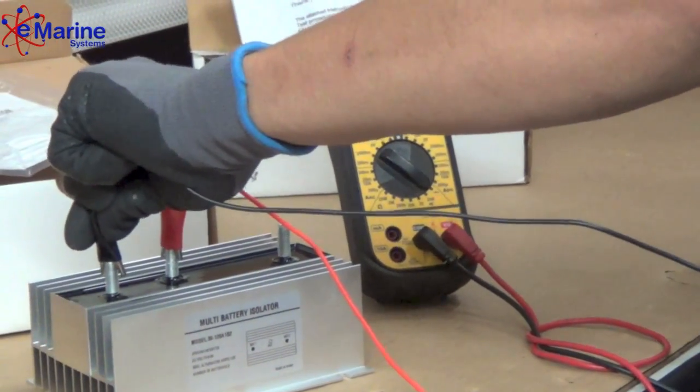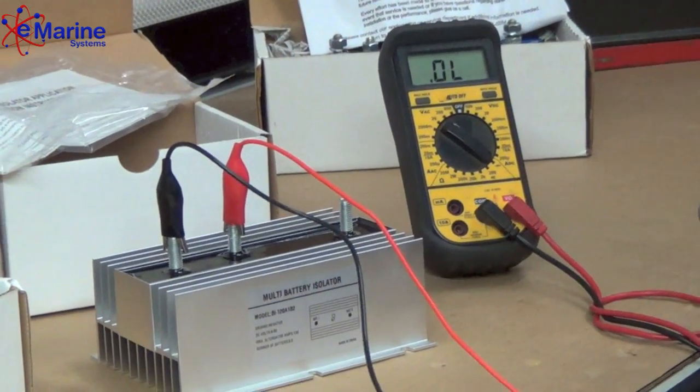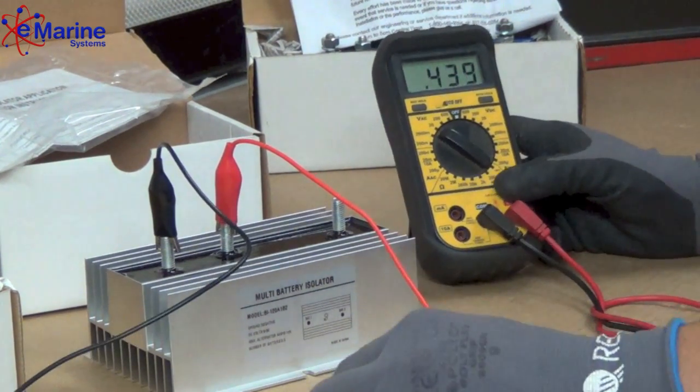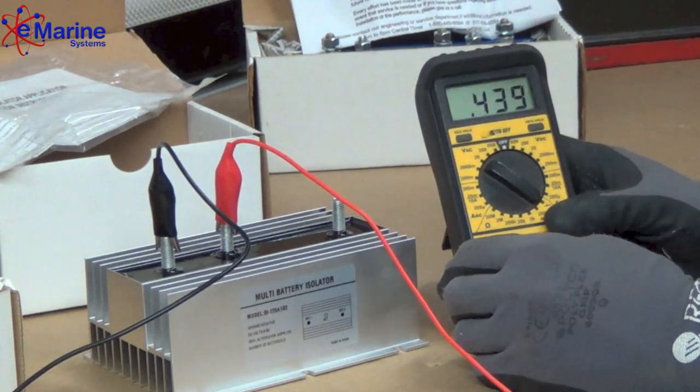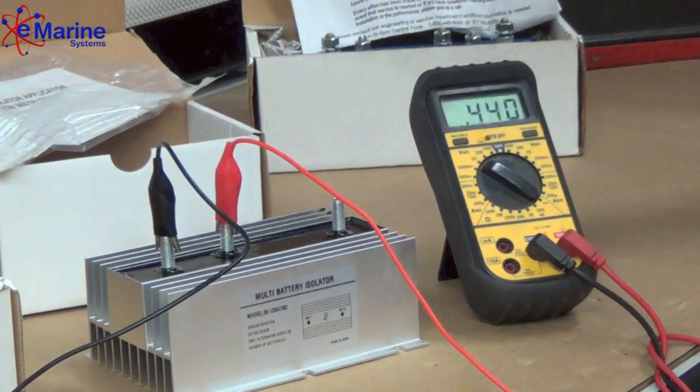We want to make sure that electricity can flow from one point to the other. Now we get a value from the diode that's within the isolator, showing that electricity will flow in that direction. We reverse our leads.